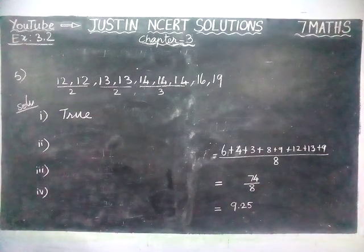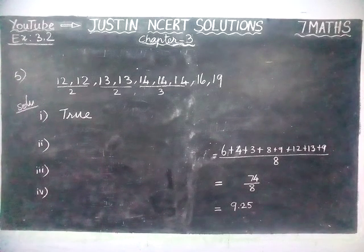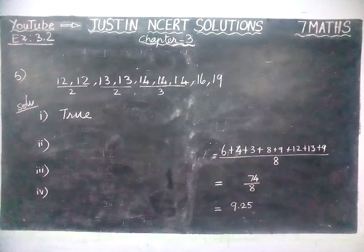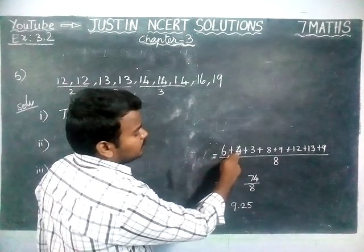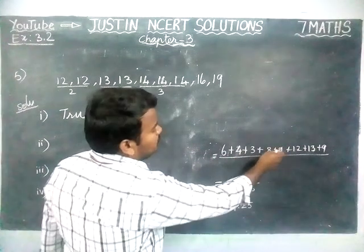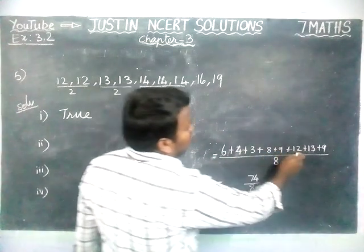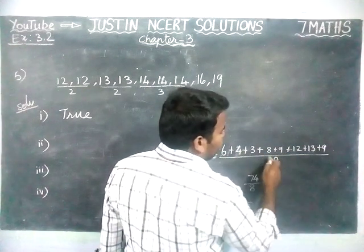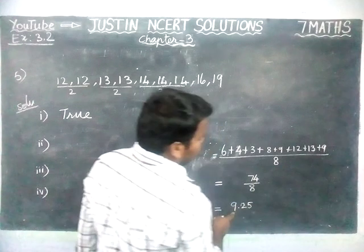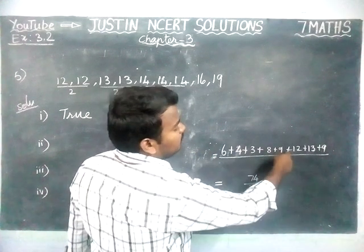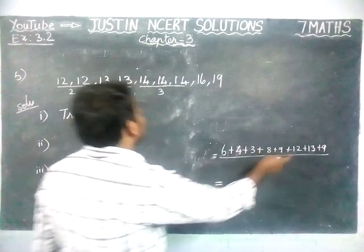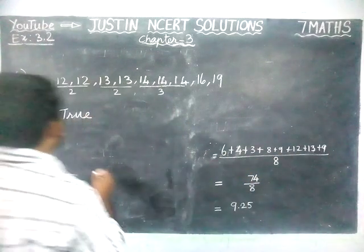Next question: the mean is one of the numbers in the data. We will check this. 6 + 4 + 3 + 8 + 9 + 12 + 13 + 9 divided by 8. The mean is 9.25, and 9.25 is not one of the values in the given data. Therefore, that statement is false.